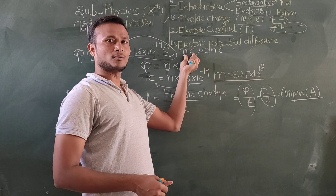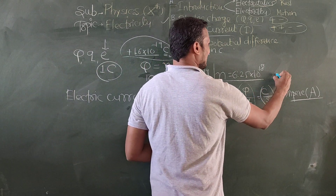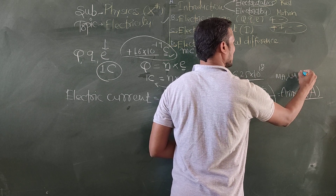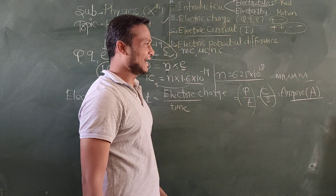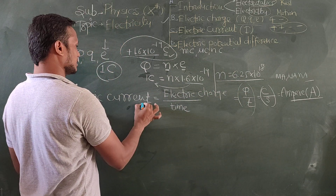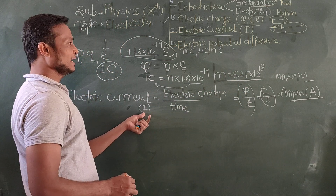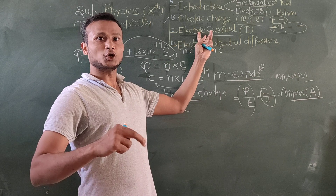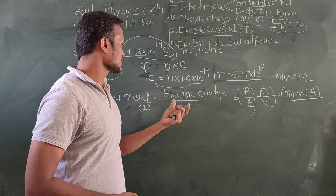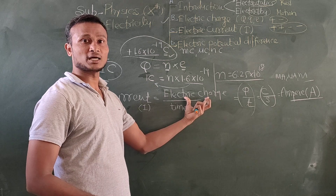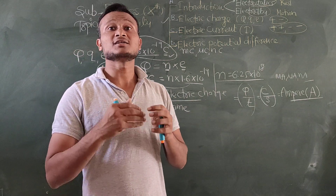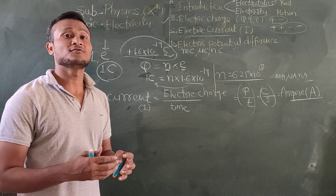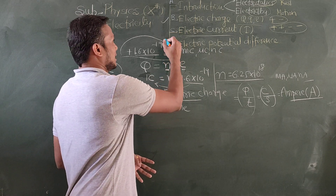If you have a very small or minor current, we go for milliampere, and for further small current we use microampere or nanoampere. Just like water current is a flow of water and wind current is a flow of wind, similarly electric current is a flow of electric charge.